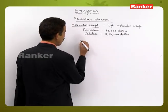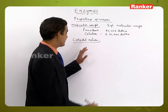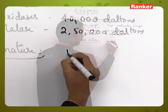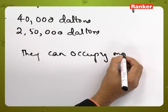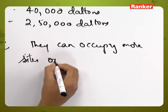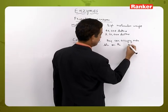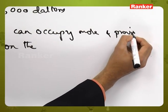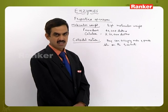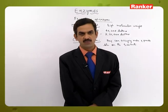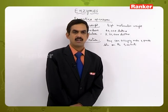The next property is colloidal nature. Enzymes have a colloidal nature, which means they occupy more sites and provide a larger surface area to the substrate molecule, allowing more substrate molecules to occupy the active sites present on the enzyme.